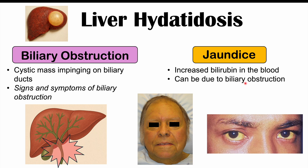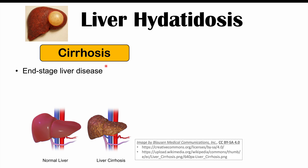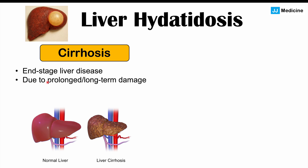Jaundice can also be due to cirrhosis — end-stage liver disease. If the cyst keeps growing, or if there are multiple cysts, the architecture of the liver starts to become impacted. Some of the cells of the liver become damaged, and if this continues for long periods of time, we get continuous damage leading to scarring — cirrhosis. Once enough scarring has occurred and there is less functional liver tissue than needed, we have end-stage liver disease. This is more likely to occur with multiple cysts throughout the liver.